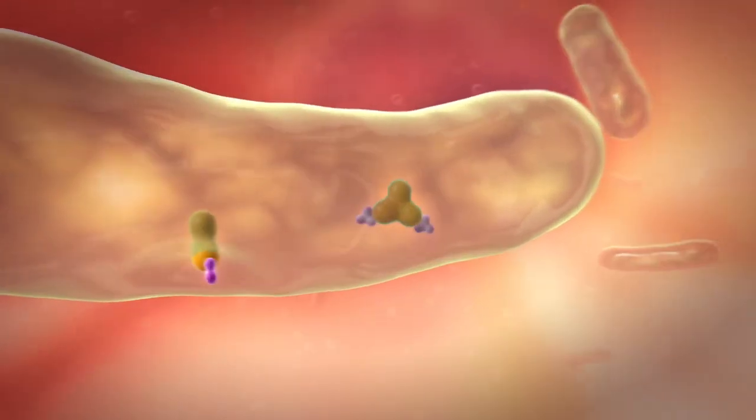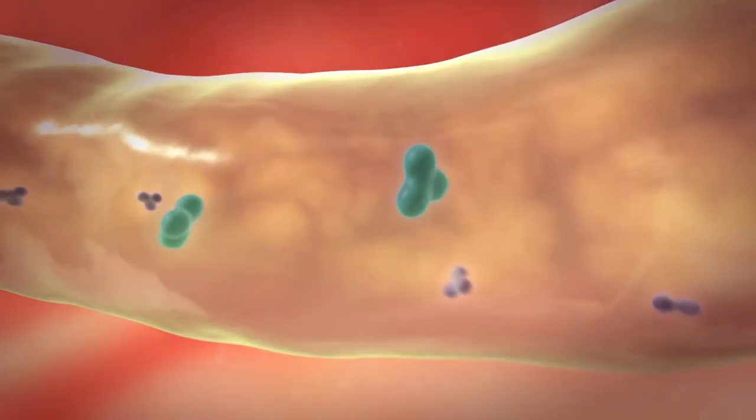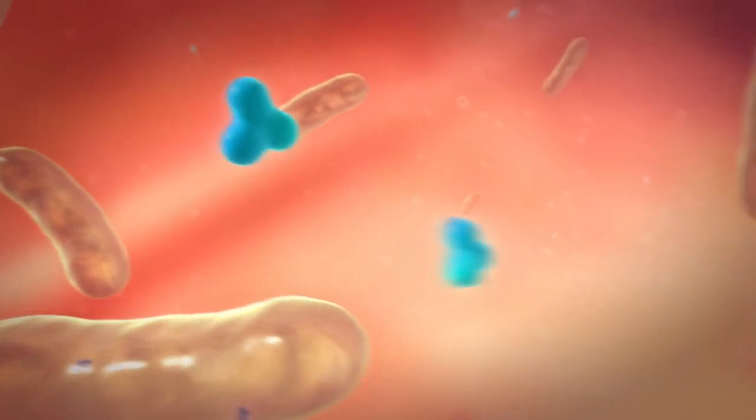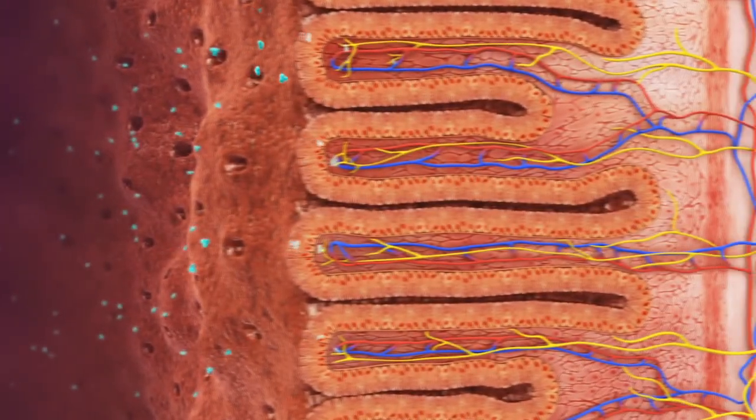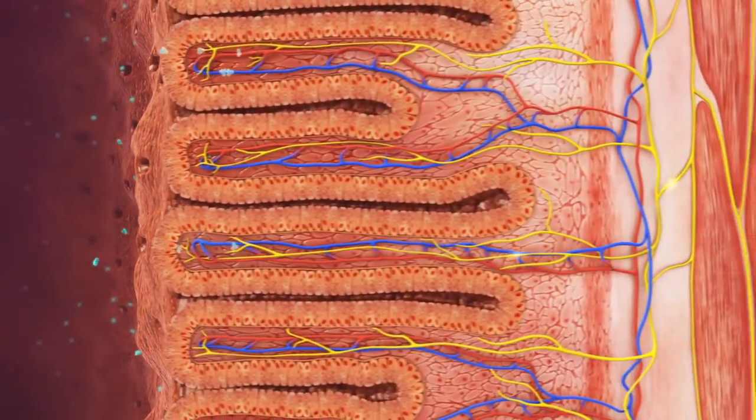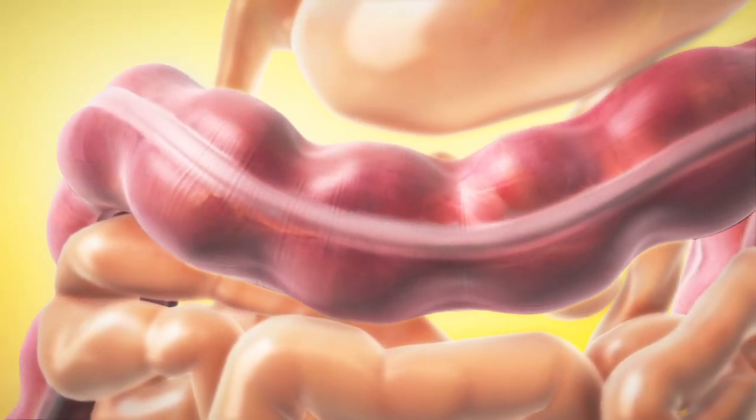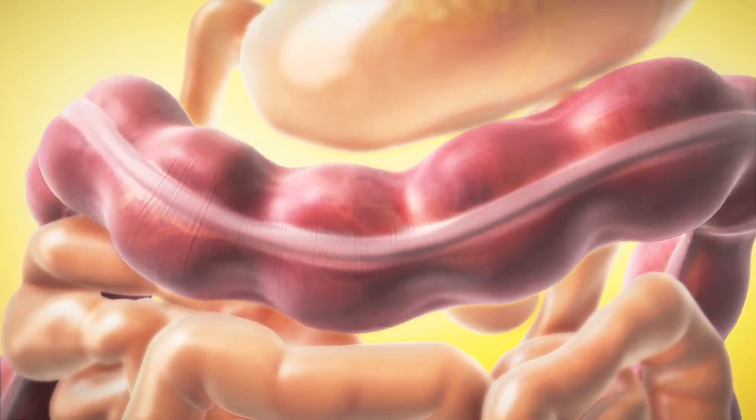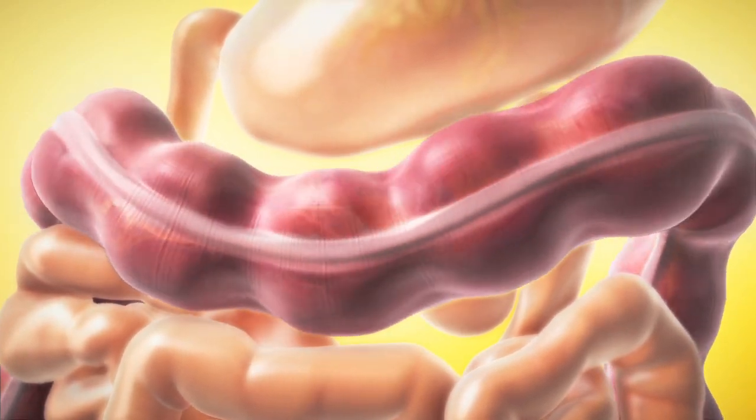The substance is converted by bacteria in the colon into an active metabolite. This then stimulates nerve endings in the intestinal wall, thereby increasing peristalsis. The contractions carry the bowel content along towards the rectum.